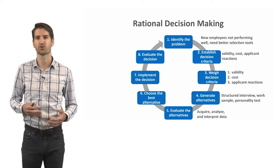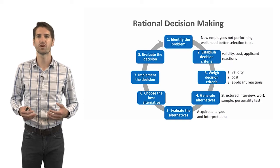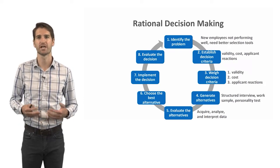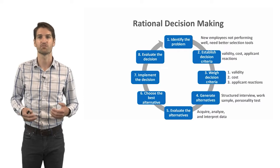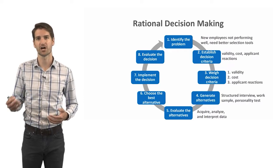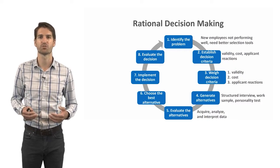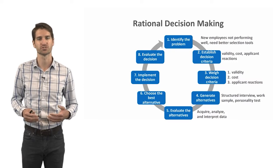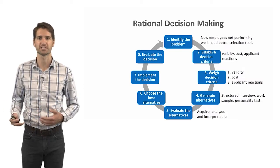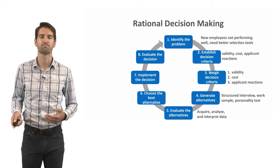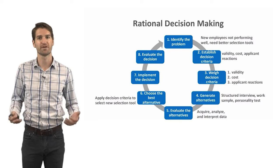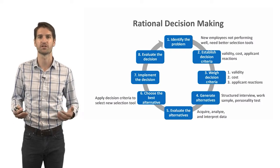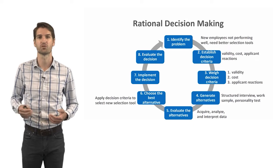Now we're ready to evaluate these decision alternatives by acquiring, analyzing, and interpreting data. We'll likely conduct a criterion-related validation design—either concurrent or predictive—for each selection tool, assess the cost, and survey applicants to gauge their reactions. Based on those data, we might find that the work sample was the best predictor of future job performance, and so we decide to go with that one.